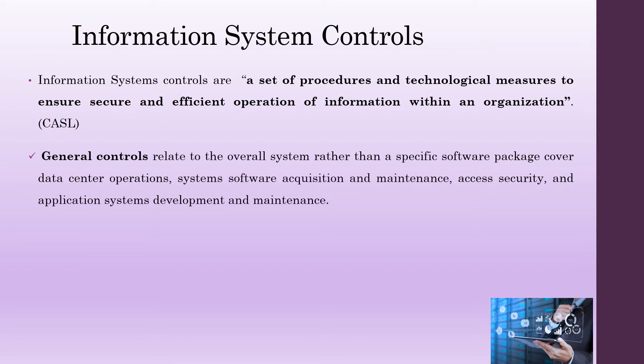There are two sets of controls. The first one is general controls. General controls relate to the overall system rather than a specific software package, and cover areas such as data center operations, system software acquisition and maintenance, access security, and application system development and maintenance.